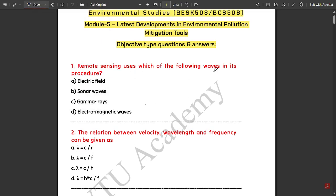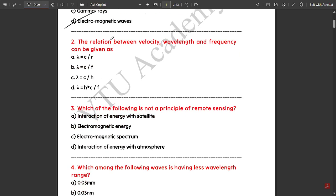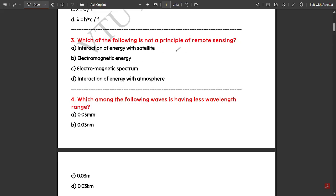Remote sensing uses which of the following waves in its procedure? Remote sensing basically uses electromagnetic waves. Next question: the relation between velocity, wavelength, and frequency can be given as the basic relation, lambda equals c by f.